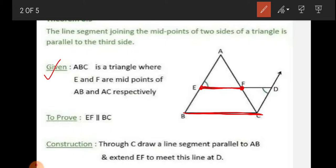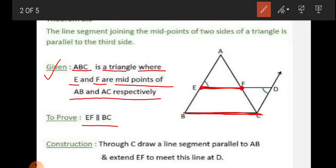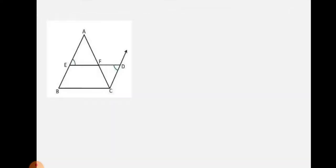Given that ABC is a triangle where E and F are the midpoints of AB and AC respectively, we need to prove that EF is parallel to BC. Construct a line segment through C parallel to AB, and extend EF to meet this line at D. This implies CD is parallel to AB.